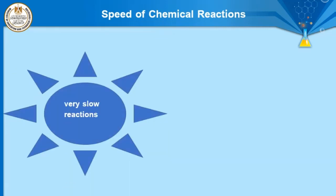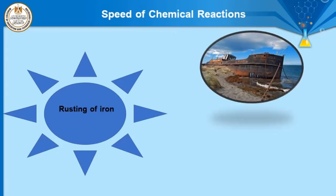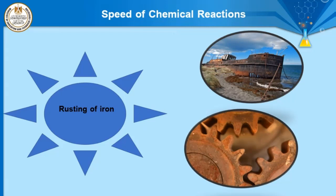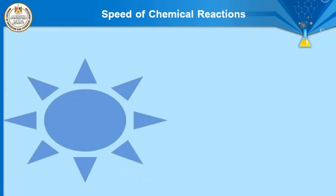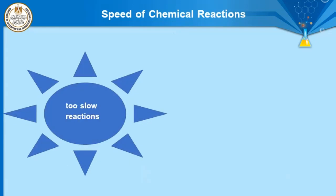The third type is very slow reactions, such as the rusting of iron. In front of you there is iron oxide, which forms from the reaction between iron and water. The fourth type is too slow reactions, such as the formation of oil or petroleum.